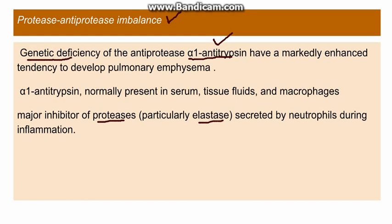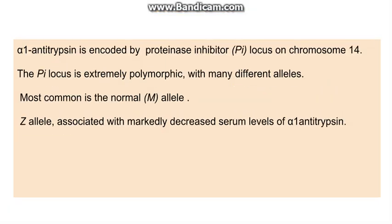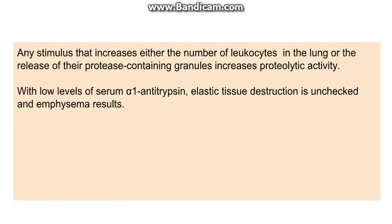Alpha-1 antitrypsin is normally present in the serum, tissue fluids, and macrophages. It is encoded by the PI locus (proteinase inhibitor locus) on chromosome 14, which is highly polymorphic. The most common allele is the normal M allele, which leads to normal production of alpha-1 antitrypsin. The Z allele leads to markedly decreased levels of alpha-1 antitrypsin.